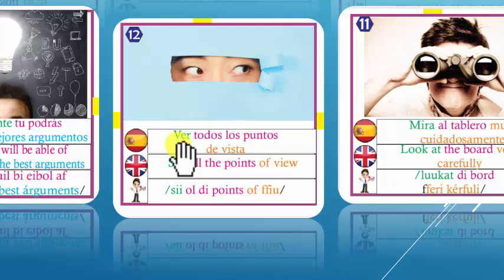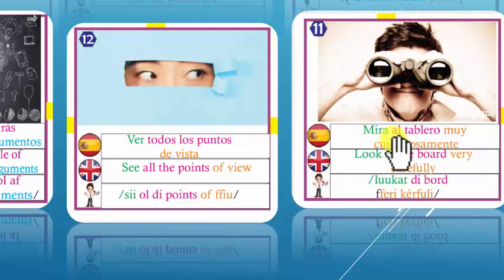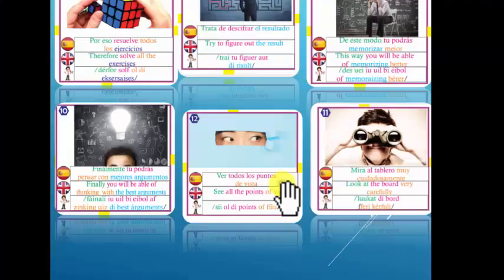Number 12: See all the points of view. Point of view — puntos de vista. Mira todos los puntos de vista. Number 13: Look at the board very carefully. Mirar — Look at. Look at the board very carefully. Mira el tablero muy cuidadosamente.